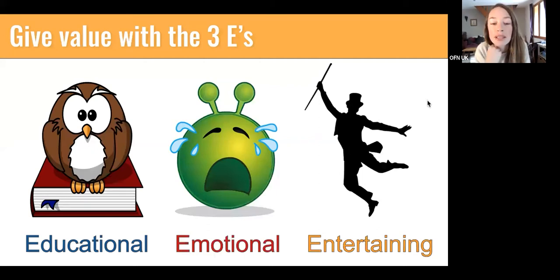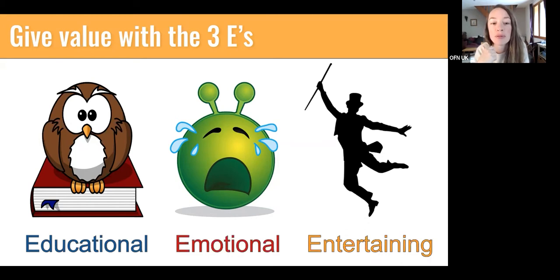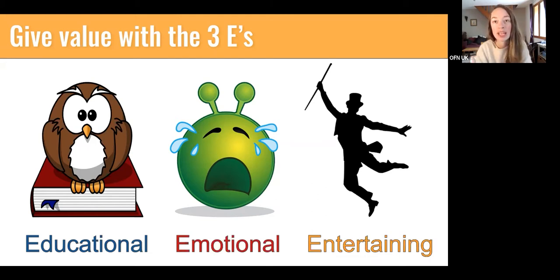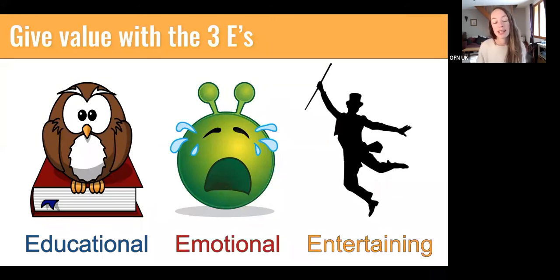Here's something I use as a quick check before posting anything: is the post giving value? The three E's — questioning whether a post is Educational, Emotional, or Entertaining — is a really simple way of checking that what you're putting on social media is offering value to your audience. Before you post, does it cover at least one of these points?